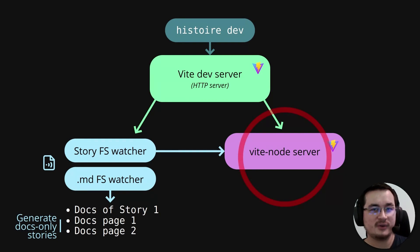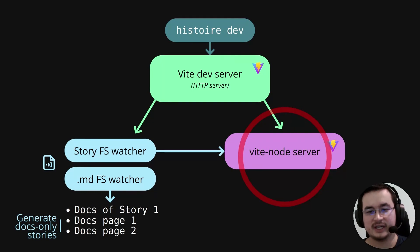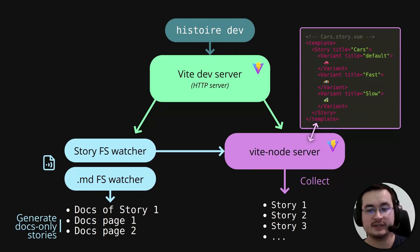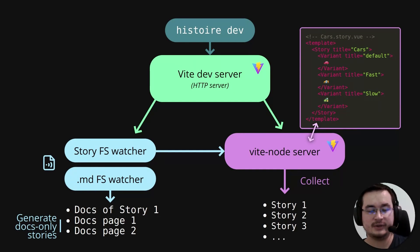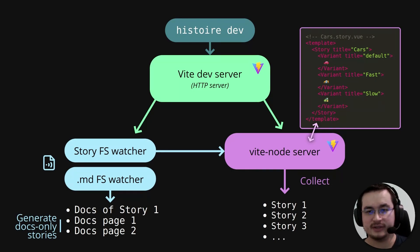Next to it, we have a ViteNode server, which is useful because Node doesn't understand some of the files in your project the way Vite does. For example, we can have a Vue component as a story, which is going to be processed and executed by ViteNode instead of Node directly. This is the collection phase where Histoire gets information about the title of the stories and the number of variants, which is helpful in the main UI.